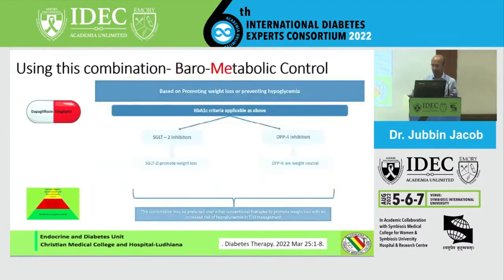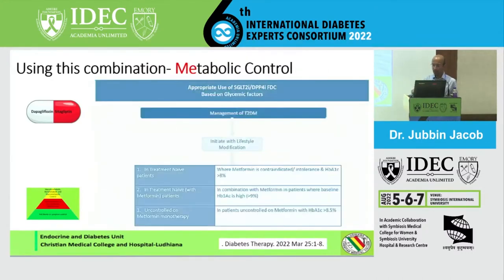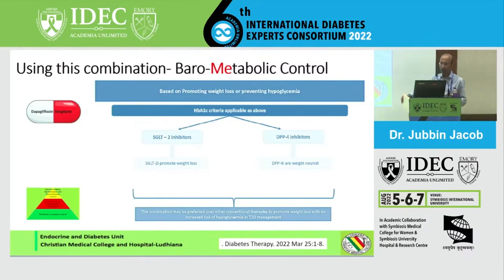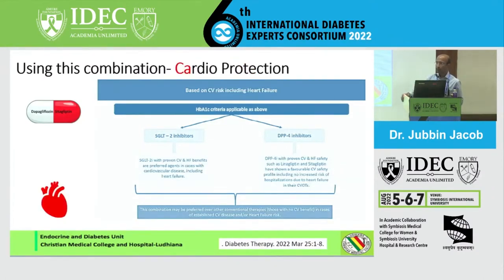This applies similarly as second-line management for patients already on metformin, or those already on insulin and other agents who are still not meeting glycemic targets — this could be a good combination for them as well. For promoting weight loss and preventing hypoglycemia across both HbA1c criteria, you could use SGLT2 inhibitors or DPP-4, or use this combination. Based on CV risk, dapagliflozin is going to give you heart failure protection, renal protection, and to some extent atherosclerotic cardiovascular risk reduction. So this combination will work in those patients.